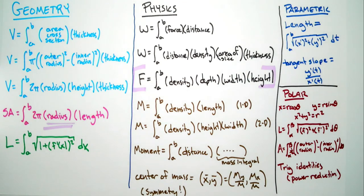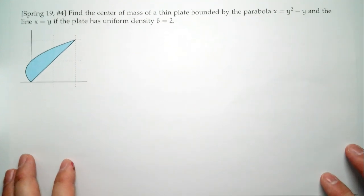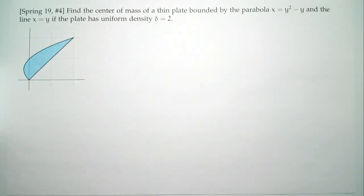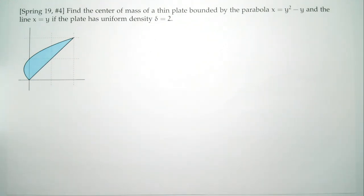That's all the formulas you need to know. The most popular question I got was Spring 19, number four: find the center of mass of a thin plate bounded by the parabola x = y² − y and the line x = y, with uniform density δ = 2. There's a picture. This exam is loaded with pictures — if we thought the picture would help, it's been provided. Some are pretty nice pictures.